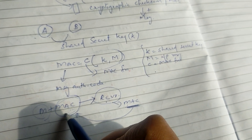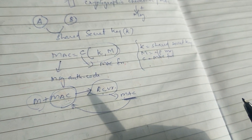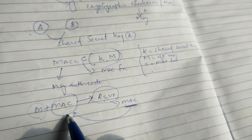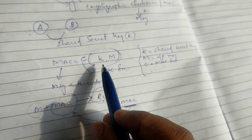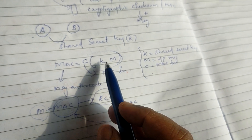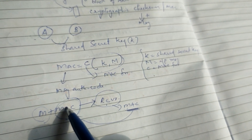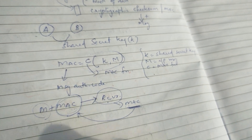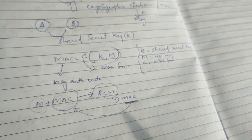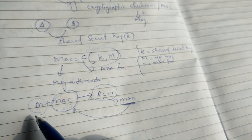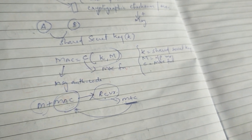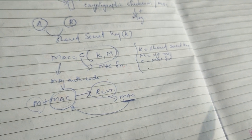Because the MAC is calculated using the secret key. This secret key cannot be found by an attacker. This secret key is known only to the sender and receiver. So in this message, we do not have confidentiality.